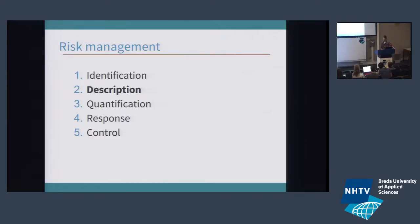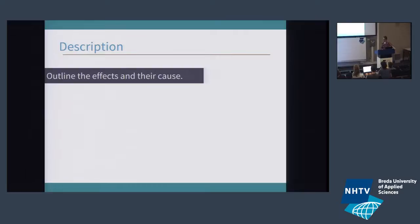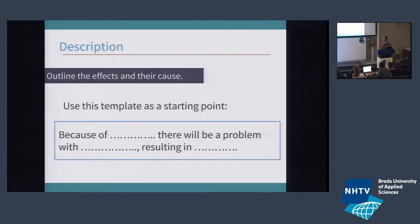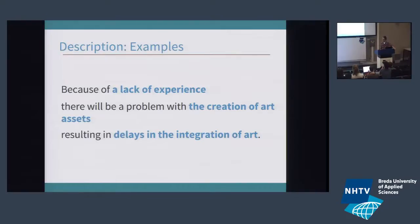Once you've identified what kind of risk it is, you describe it. There's a template for how you can do this. It's important that you have the cause and the effect. The format is: because of X, there will be a problem with Y, resulting in some negative outcome. For instance: because of a lack of experience in the art department, there will be a problem with the creation of art assets resulting in delays of the integration of art. This is an objective format of describing a risk, instead of 'art is lazy' or 'art is always late.'